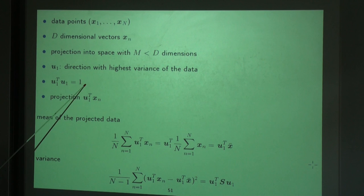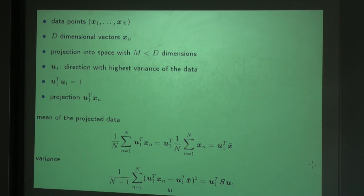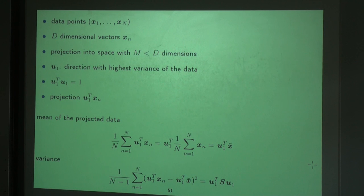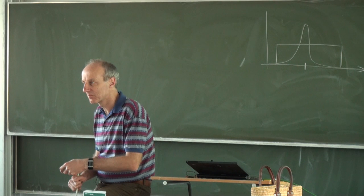This constraint means u1 is a unit vector — a vector of length one. We must impose this restriction; otherwise, we'd allow vectors of arbitrary length and there would be no maximum — the projected values would go to infinity. If we fix the length and just turn the vector around, we determine the direction of maximum variance.